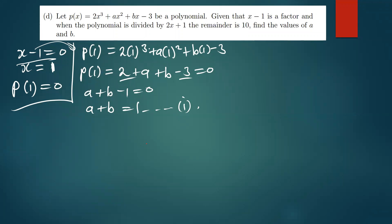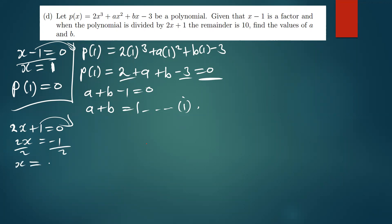The second condition says when the polynomial is divided by 2x + 1 the remainder is 10. So instead of equating to zero like before, we equate the result to 10. This method is known as the remainder and factor theorem. Setting 2x + 1 = 0 gives 2x = -1, so x = -1/2.